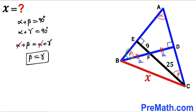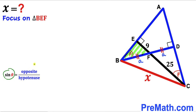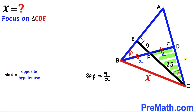We conclude that angles beta and gamma are equal and identical, so we can label both as beta. Now let's recall the famous trigonometric ratio: sine of theta equals opposite side divided by hypotenuse.